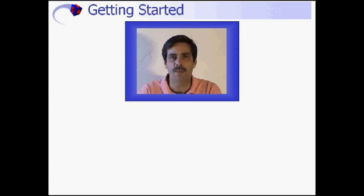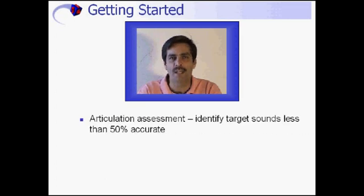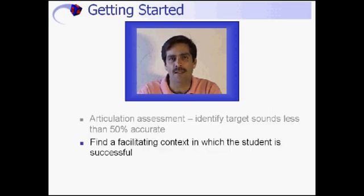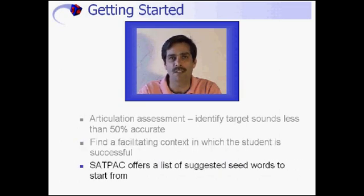Before the student begins SATPAC, an articulation assessment is completed. Sounds that were less than 50% accurate are identified and targeted for remediation. Before beginning the establishment phase, the therapist chooses an error sound and then finds or develops a facilitating context at the CVC-CVC syllable junction. SATPAC supports this process by offering a list of suggested seed words for use with various types of errors and phonological processes.